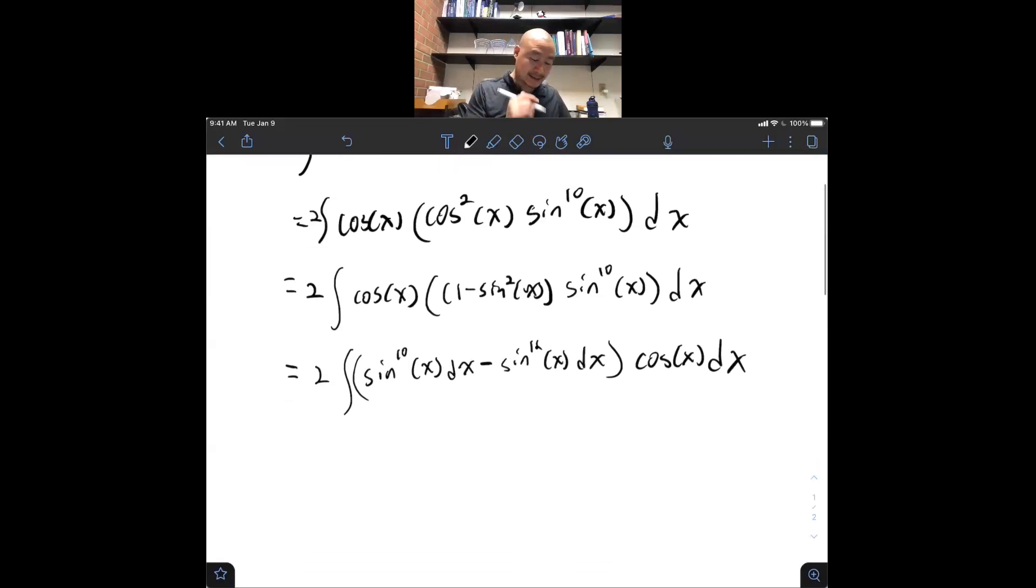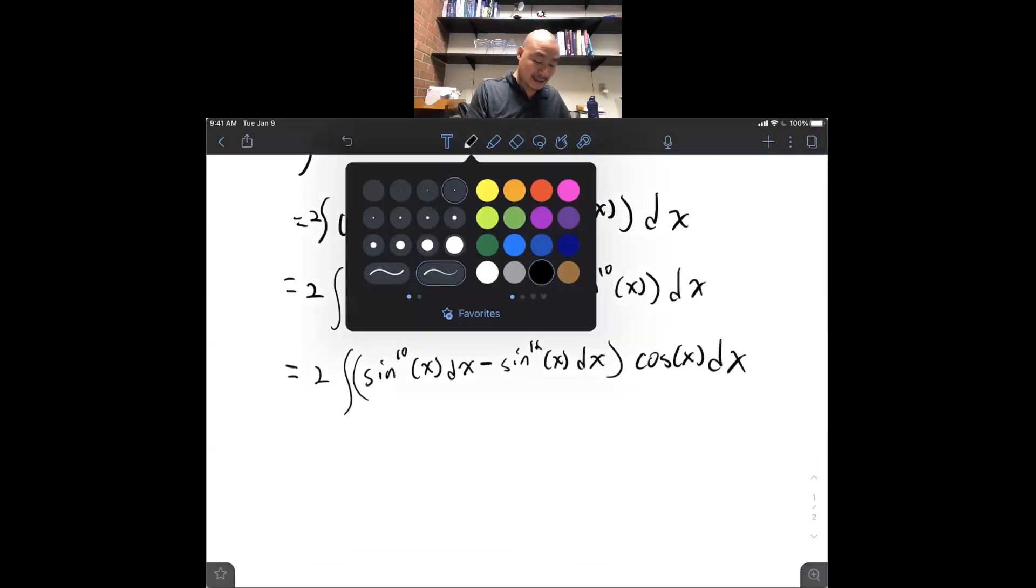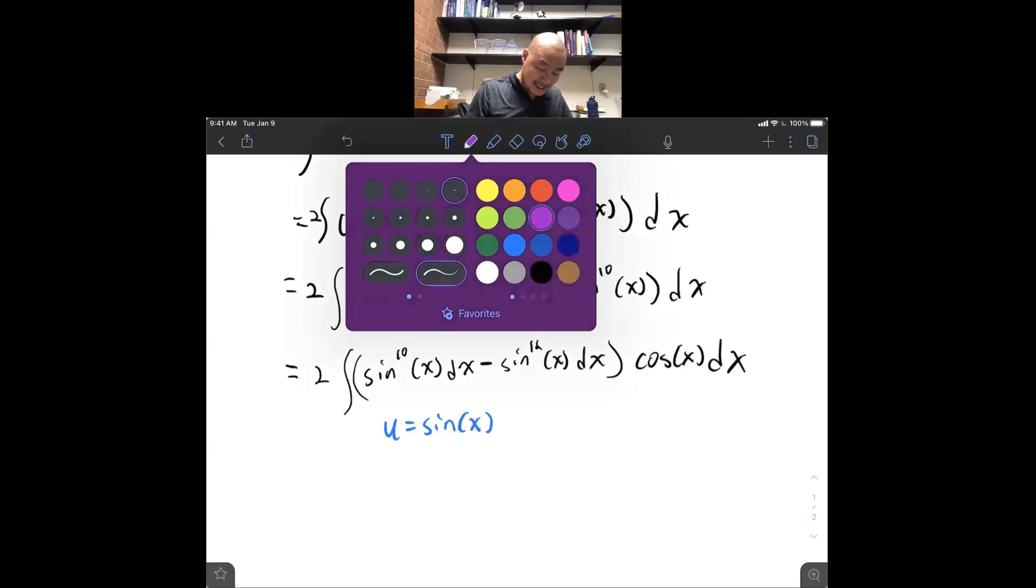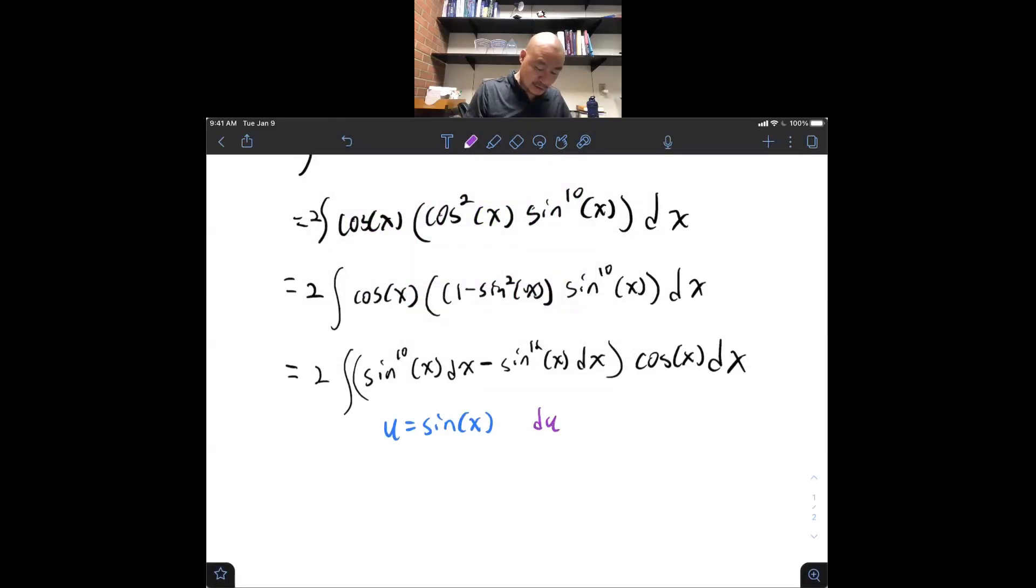Alright. Now, as promised, cosine makes for a natural du. So, what u should likely be, then, is sine of x, and then du would be cosine of x, dx.